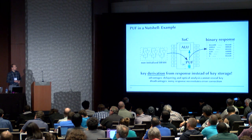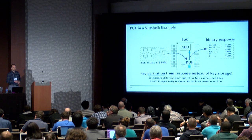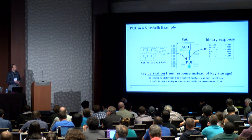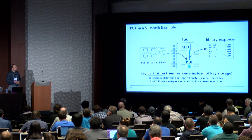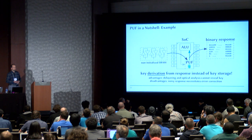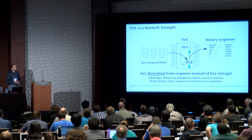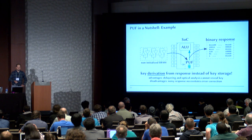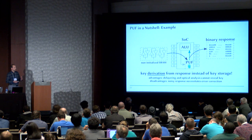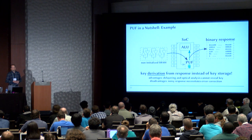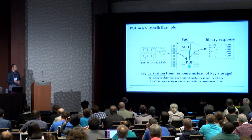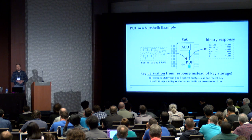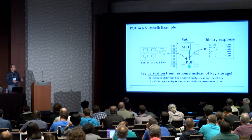One of the most popular PUFs is the so-called SRAM PUF. Here you have the SRAM in a non-initialized state, and if you power it up, you get a random fingerprint. You have your system-on-chip, some ALU, you apply the stimulus, and out comes the somewhat random fingerprint. The basic idea is key derivation from a response instead of key storage. The advantage is that if you do delayering and optical analysis of the SoC, you cannot reveal the key. The disadvantage is that the response is somewhat noisy, so you need error correction and helper data.